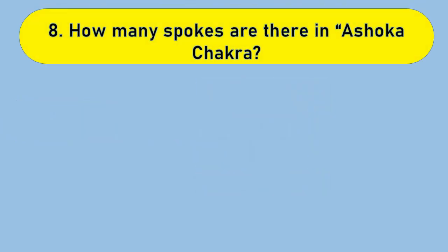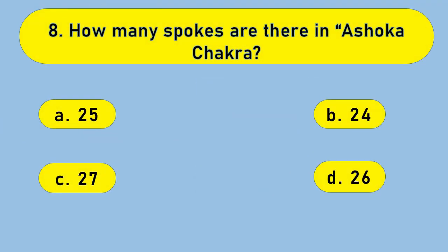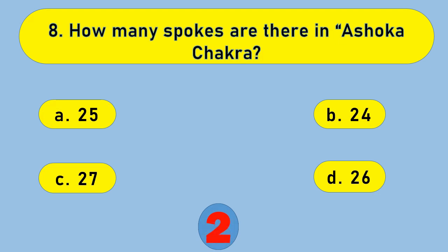How many spokes are there in the Ashok Chakra? Your options are as given. The right answer is 24.